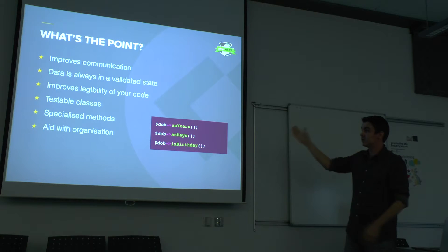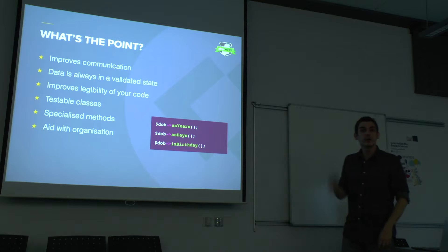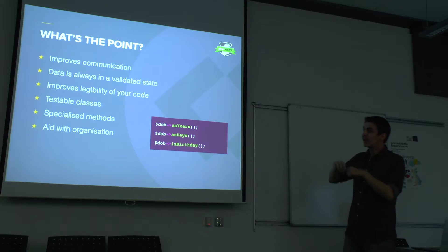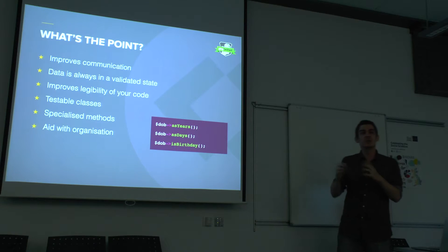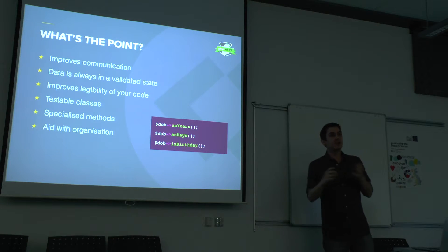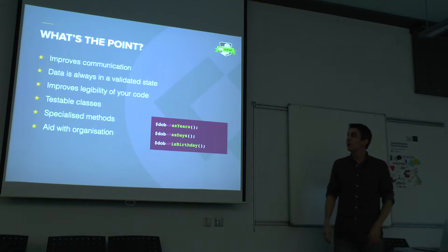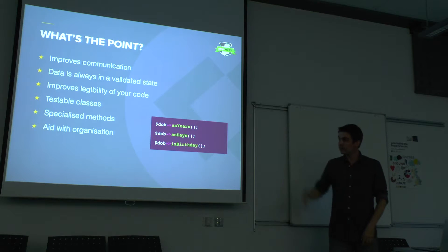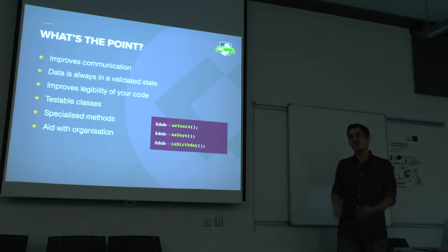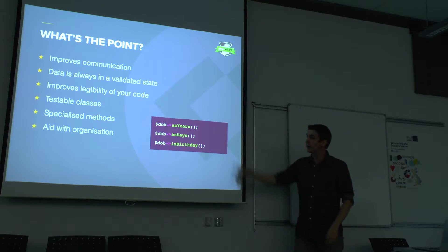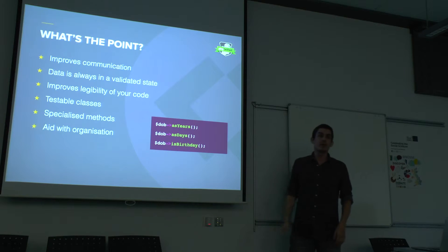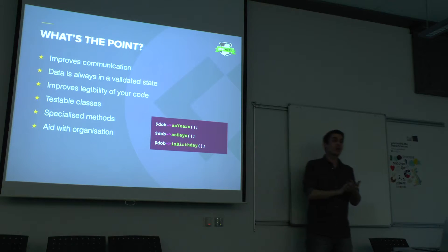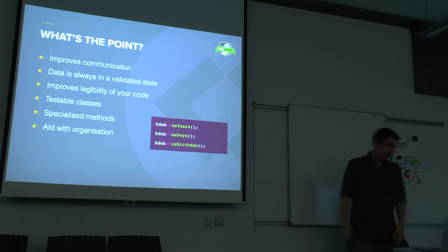It also improves the legibility of your code — it's really, really nice to read when you're writing in plain English. By encapsulating value objects like full name or email address, you can actually make them testable classes. I can test that an email address is completely valid by throwing stuff at it and writing tests for it, making sure it all works properly. You can also include some specialised methods on the classes themselves — so on DateOfBirth, for example, I can return it as years, return how many days they've been alive, or check if it's their birthday. Those can all be put onto your value objects.